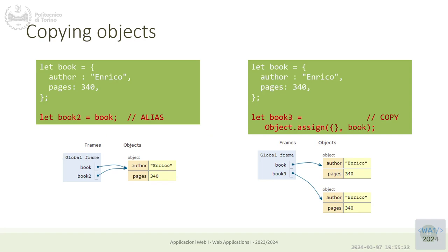Objects can be copied by reference or by creating actual copies. By default, an assignment only copies the reference — that's the general rule with no exceptions. If I write `book2 = book`, I make a new reference alias pointing to the same object.